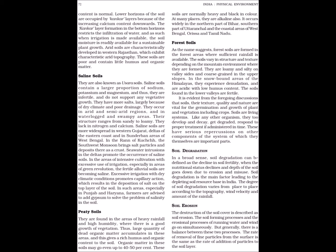Saline soils. They are also known as Usara soils. Saline soils contain a larger proportion of sodium, potassium and magnesium and thus they are infertile and do not support any vegetative growth. They have more salts, largely because of dry climate and poor drainage. They occur in arid and semi-arid regions and in waterlogged and swampy areas. Their structure ranges from sandy to loamy. They lack in nitrogen and calcium. Saline soils are more widespread in western Gujarat, deltas of the eastern coast and in Sundarban areas of West Bengal. In the Rann of Kutch, the southwest monsoon brings salt particles and deposits them as a crust.